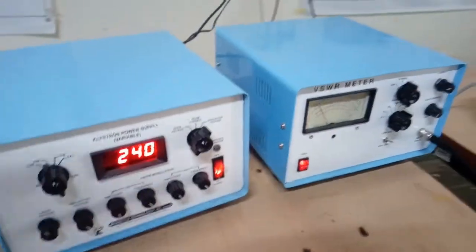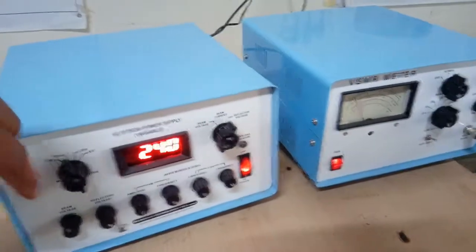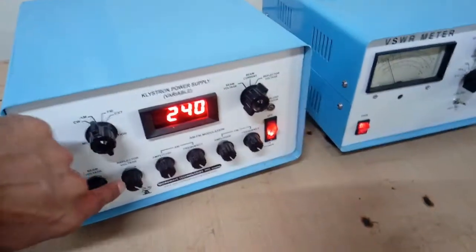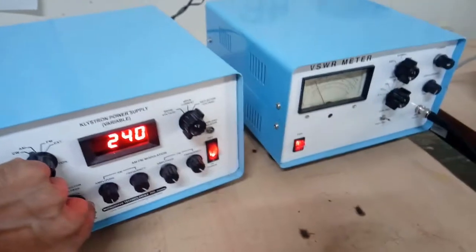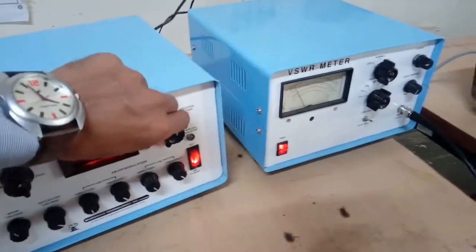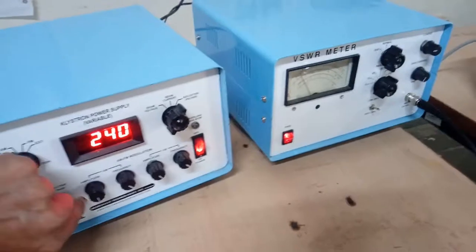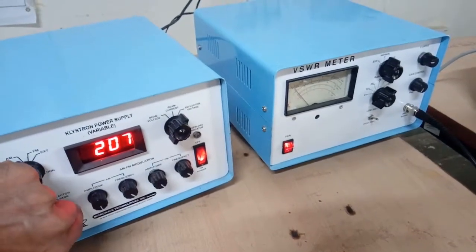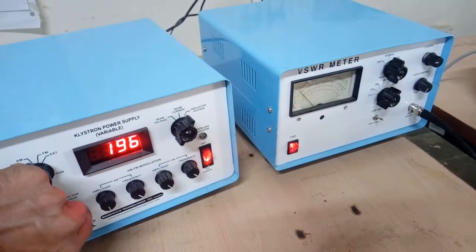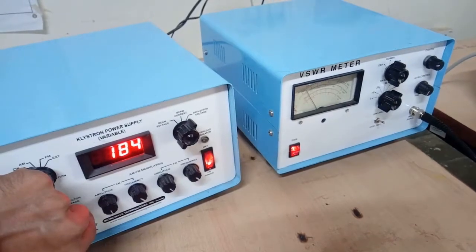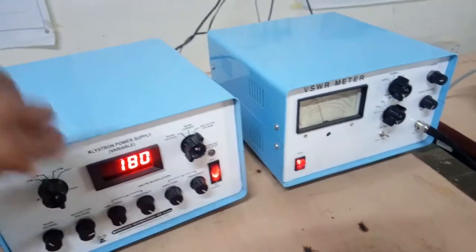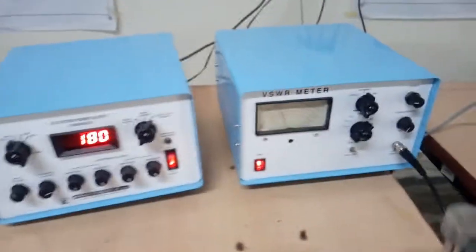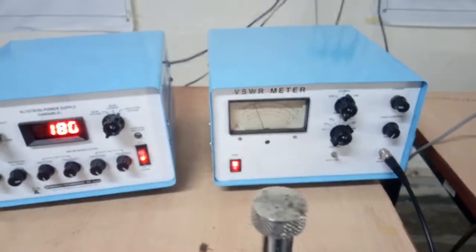Now we will change the reflector voltage. Reflector voltage is fully clockwise, we have to reduce it now in anticlockwise direction. So when it is increasing, we will keep it at 180. You can see the deflection in VSWR meter.